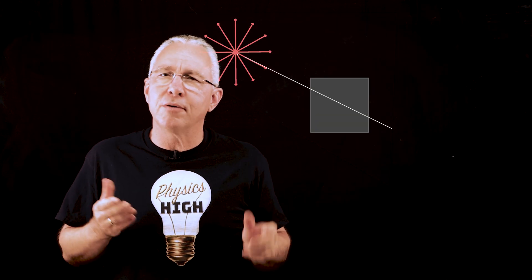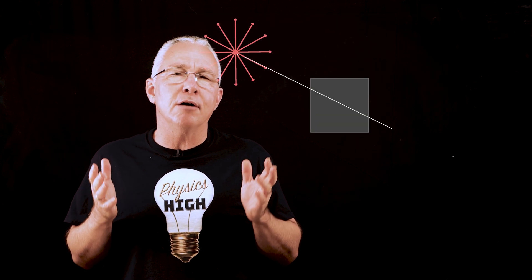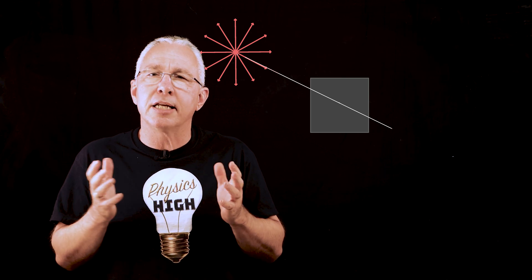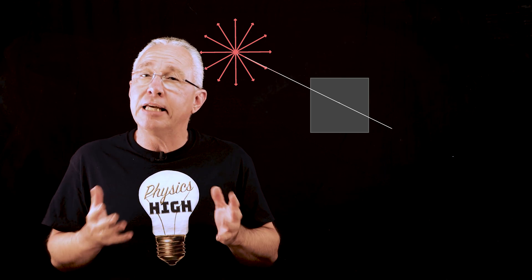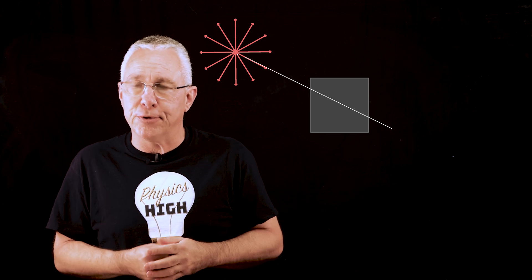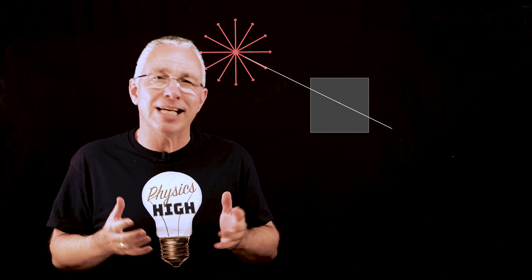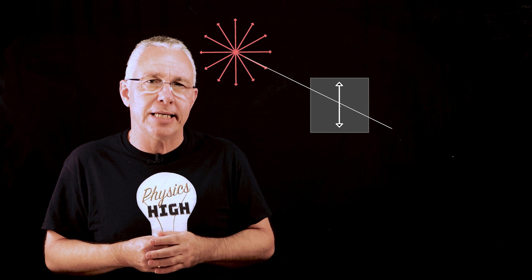So a linear polarizing filter is made up of long molecular chains that absorb all components of the electric field in one direction leaving all other components passing through. Now this means a polarizing filter has an axis of polarization.